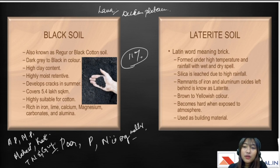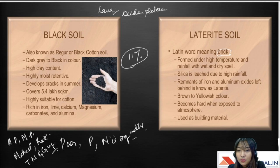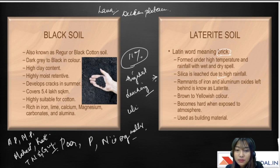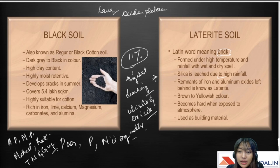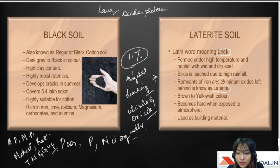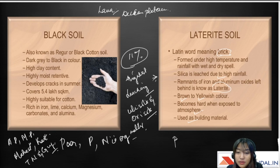Laterite soil is derived from the Latin word meaning brick. It is formed under high temperature and rainfall with alternate wet and dry spells. Silica is leached during high rainfall — this soil has the highest leaching. It is mostly formed by Ultisols and Oxisols. Remnants of iron and aluminum oxides left behind are known as laterite. The color is brown to yellow and it becomes hard when exposed to the atmosphere, used as a building material. It is also suitable for plantation crops and rice cultivation.